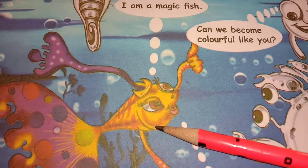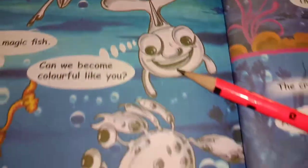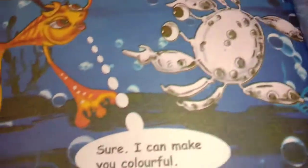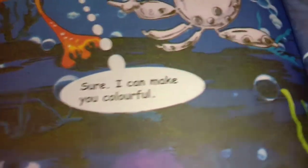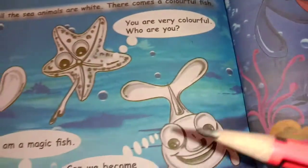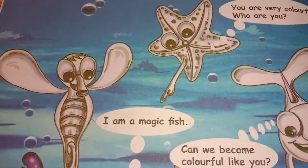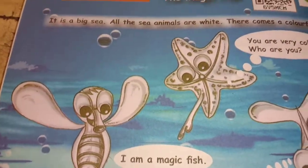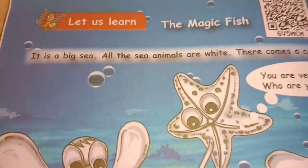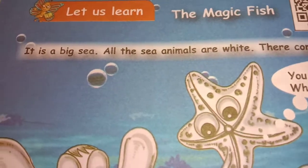See here, this is a magic fish. Crab, dolphin. See the next one, what else is given here. So these are the sea animals. Now see what they are going to do and how they are going to change the colours.